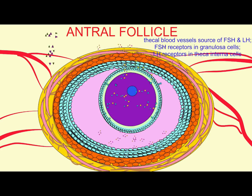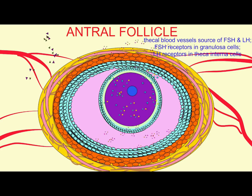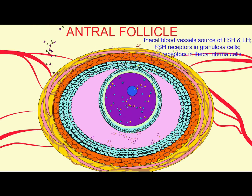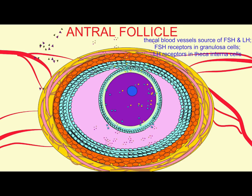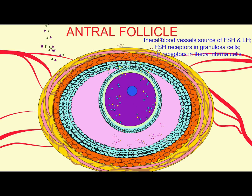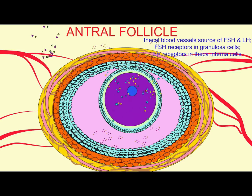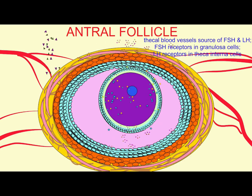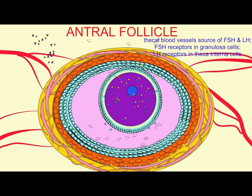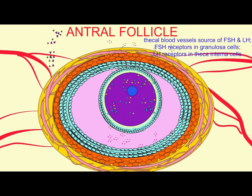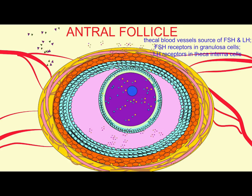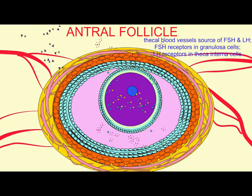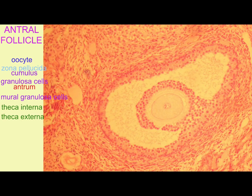The granulosa cells begin to make the estrogen which will affect the uterine lining. The estrogen produced by the granulosa cells is derived from the precursors produced from the theca interna.